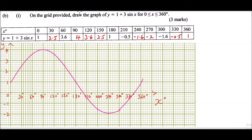This is the graph of y equals 1 plus 3 sin x, which is Part B(i), earning three marks. Now let's look at what is required in Part B(ii).